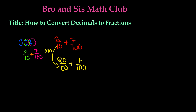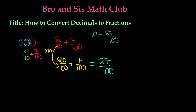So we know that 20 over 100 plus 7 over 100 gives us 27 over 100. And this is our fraction. So 0.27 is equal to 27 over 100. This was the more lengthy method of turning a decimal into a fraction.